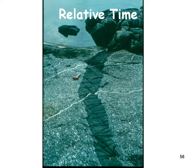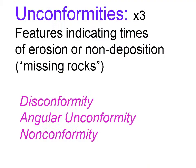Looking at real geology for cross-cutting relationships: the first thing that happened was the bedrock — probably a granite — cooled deep under the Earth. Then it was cut by another type of rock. Thirdly, it was cracked and the crack was filled in with probably a white silica. Unconformities are features indicating times of erosion or non-deposition — they represent missing rocks. There are different types: a disconformity, an angular unconformity, and a nonconformity.